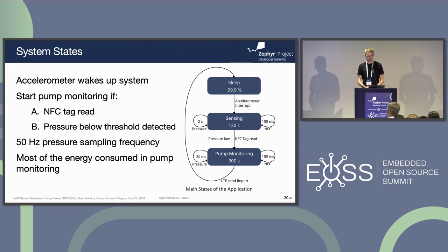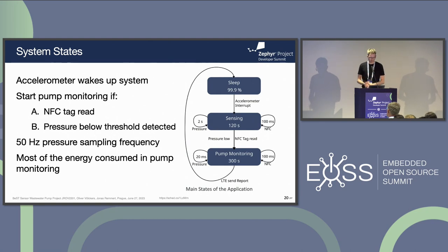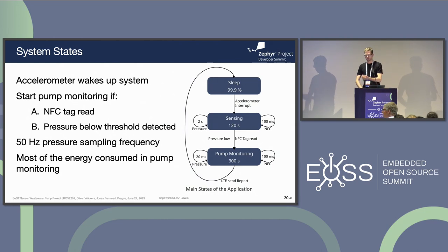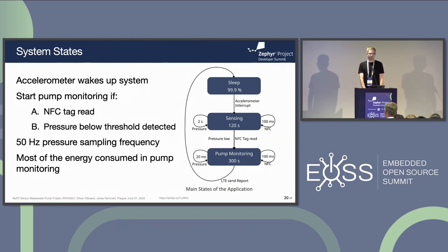The system has three main states. First is sleep mode — most of the time the system resides in sleep mode. When the accelerometer detects acceleration above a threshold, an interrupt is generated and the system switches to sensing mode, which lasts for around 120 seconds. In sensing mode, we continuously poll the NFC reader and take pressure samples every two seconds. Usually pump monitoring starts when you hold the plumbing to the tank and the NFC tag is read, but if an NFC tag is missing, we also have the option to start pump monitoring when pressure drops below a threshold. The pressure sampling frequency is 50 Hz, and most of the energy is consumed in pump monitoring, confirming that the sleep mode is actually quite low power.